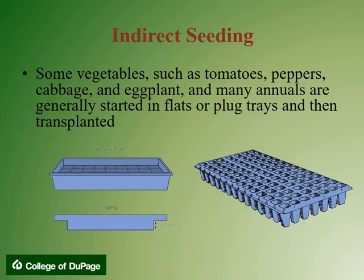Indirect seeding is the process in which a seed is sown in a place separate from where the plants will eventually grow to maturity. The seedlings are transplanted one or more times before reaching the permanent growing area. Some vegetables such as tomatoes, peppers, cabbage, and eggplant, and many annuals, are generally started in flats or plug trays and then transplanted.